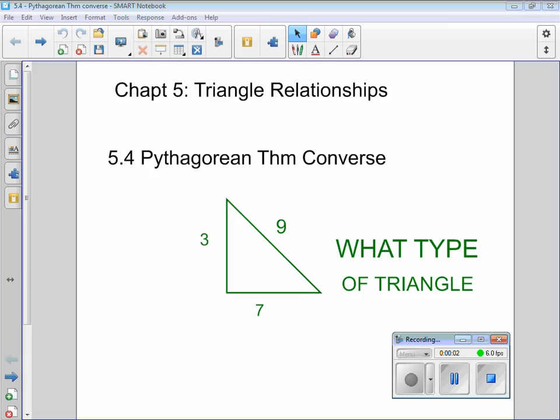Hey everybody, this is Mr. Munson. Chapter 5, Triangle Relationships. Today we're looking at concept number four, Pythagorean Theorem Converse. Basically, we're going to be able to look at a triangle like this with three sides given, and we're going to be asked what type of triangle is.